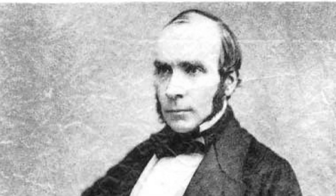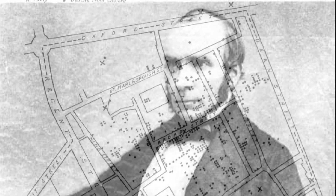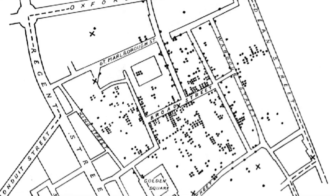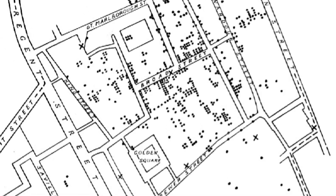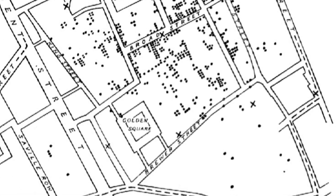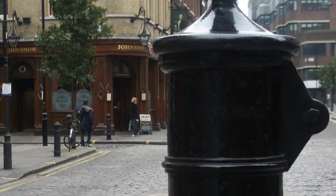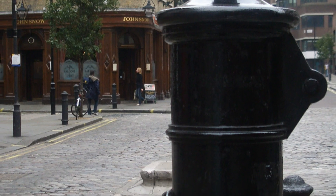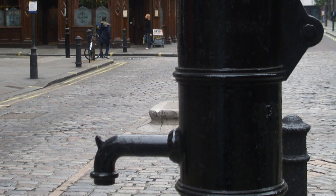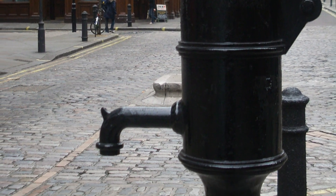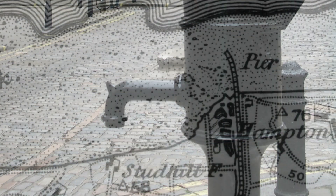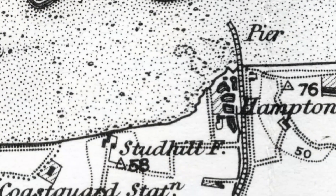He began recording individual instances of cholera with points on a map. This map eventually led him to identify the source of the outbreak — a contaminated water pump opposite the pub which now bears his name.